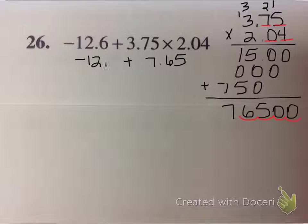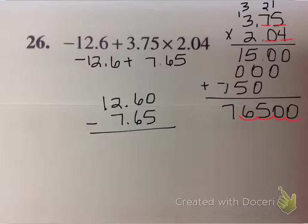So now I have negative 12.6 plus 7.65. Well, because I'm doing addition now, and my signs are different, I actually have to subtract and keep the sign of the larger. Remember when you're subtracting you have to line up your decimal points. So now I can subtract 15 and 6 is 9, and 11 minus 7 is 4. Since my signs are different, I subtract it and I keep the sign of the larger. So it looks like my final answer is going to be a negative 4.95.